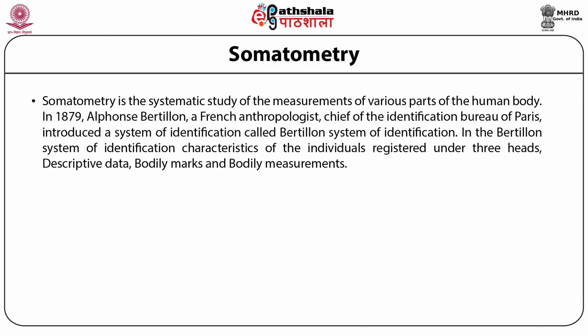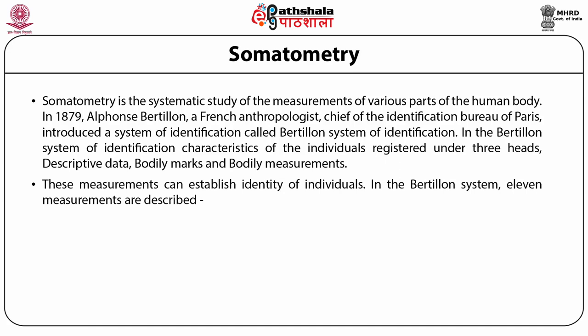In the Bertillon System of Identification, characteristics of the individual are registered under three heads. First, descriptive data such as color of hair, eyes, teeth, complexion, shape of nose, ears, chin, race, religion, caste, sex, age, and social status. Second, bodily marks such as moles, scars, tattoo marks, birthmarks, occupation marks, and acquired malformations. Third, body measurements, which are 11 in number.